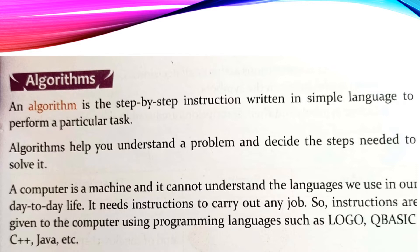Algorithm jo hai, hum keh dein ke: an algorithm is the step-by-step instruction written in a simple language to perform a particular task. Algorithm jo hai yeh step-by-step set of instructions hota hai jo aap ni language mein, local language mein, aasaan si language mein ek computer program likhne se pehle likha jata hai. Is se algorithms help you understand a problem and decide the steps needed to solve it. Algorithm mein yeh madad milti hai ke hum kisi problem ko ache se understand kartey hain, aur phir kya steps us mein lene hain, kya decisions lene honge, unpe kya steps lene padhenge, us ko hum solve karte hain algorithm ke zariye se.